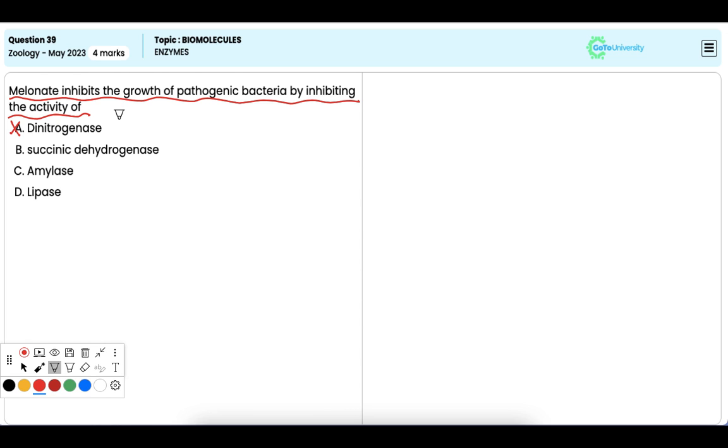Option B: Succinic dehydrogenase. Now, malonate is a competitive inhibitor of succinic dehydrogenase, an enzyme in the Krebs cycle.